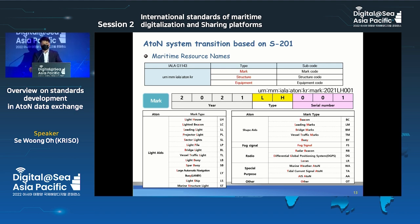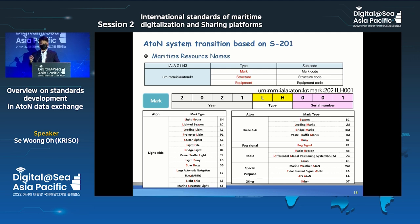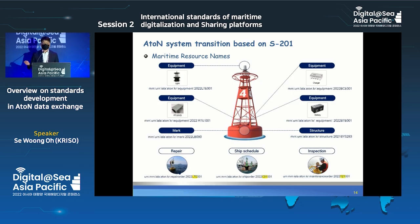Another important element is the Maritime Resource Name, or MRN. ATON consists of many parts and much information, so managing a huge amount of data requires a unique identifier to manage and issue S-201 service data. Following the IALA MRN guideline, Korea has defined an MRN syntax for its own ATON resources. For maintenance operations, the MRN concept has been applied to every process and every piece of information.